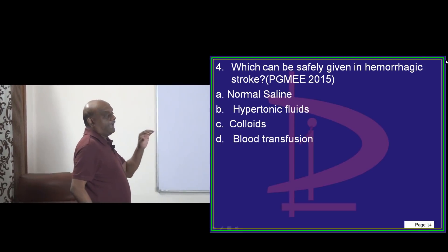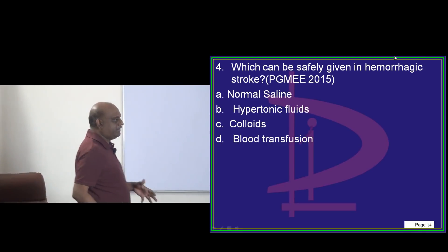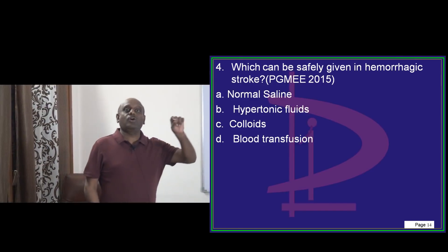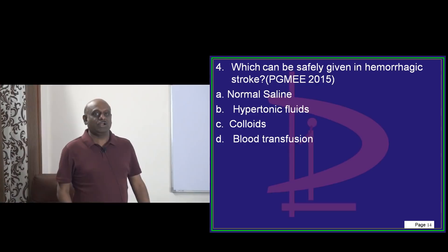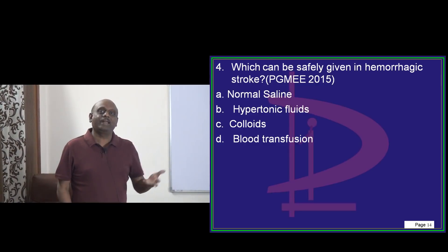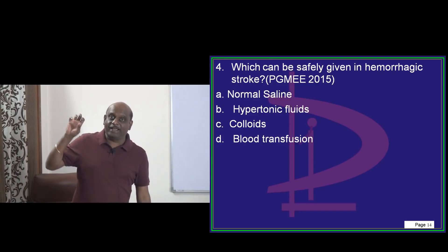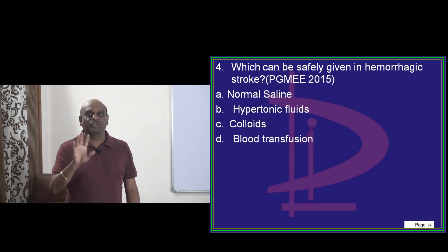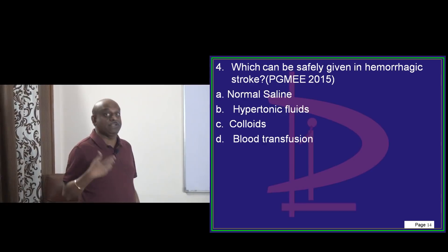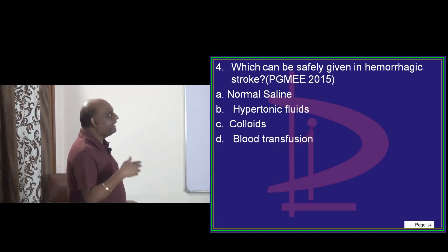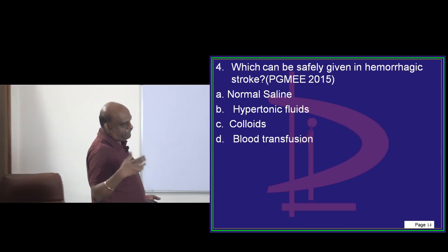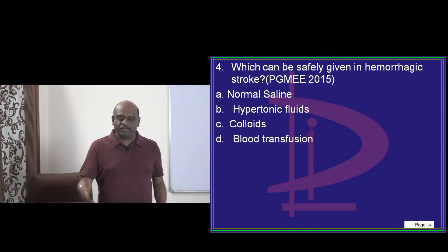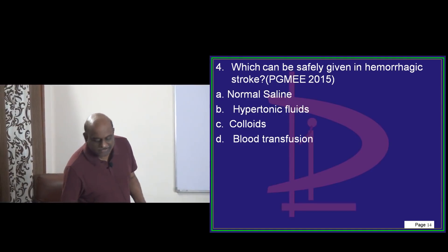How do you manage a hemorrhagic stroke? Whenever a patient comes with stroke features, the first thing you will do is a non-contrast CT — not contrast CT. If it is a hemorrhagic stroke, you will not give thrombolysis.